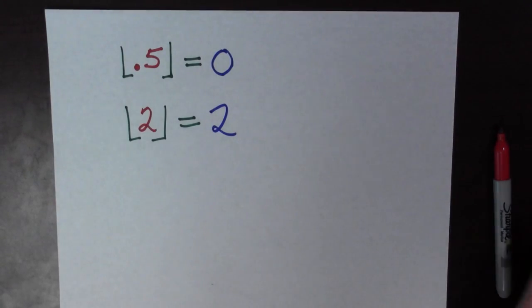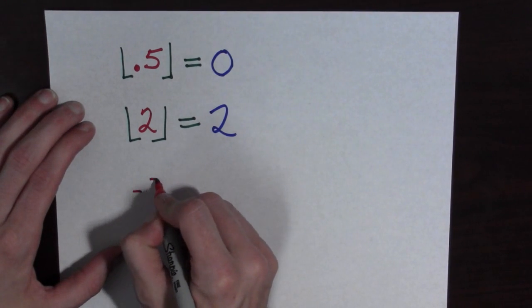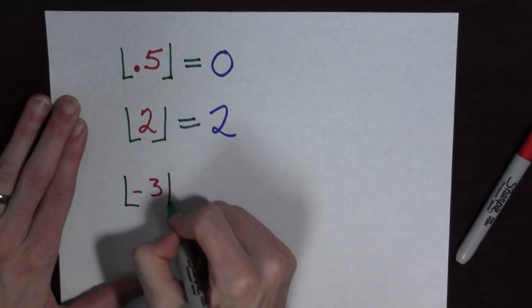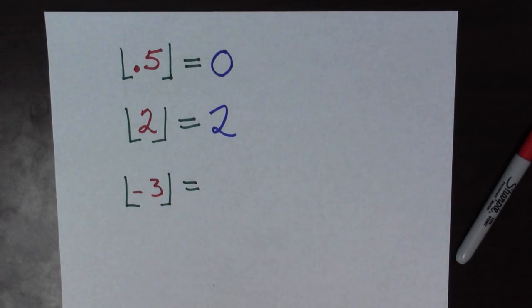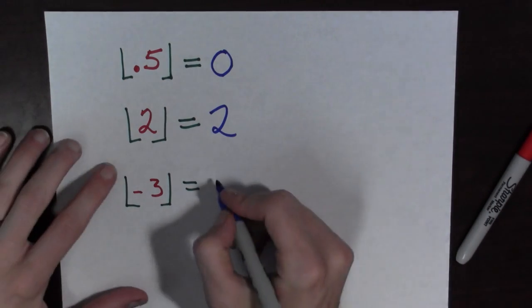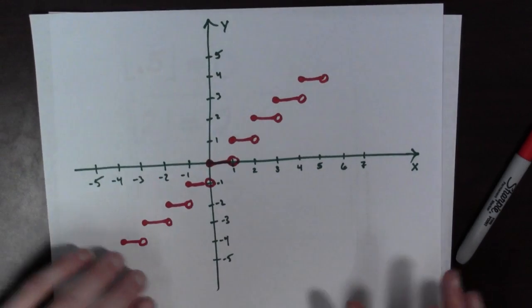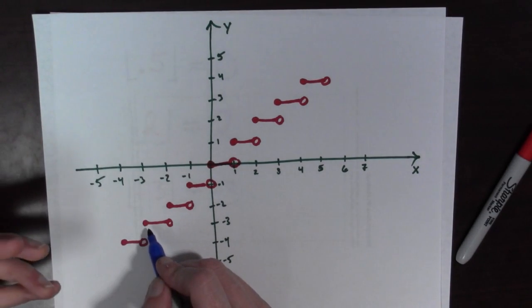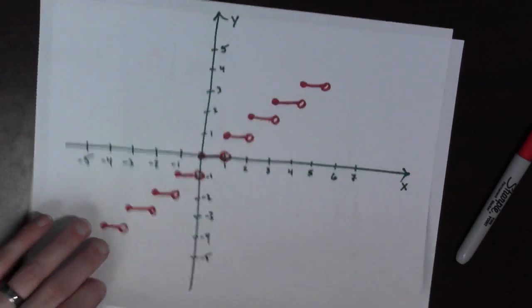And let's do one more example. How about negative 3? So, what's the Greatest Integer that's less than or equal to negative 3? Well, let's see. The Greatest Integer is going to be negative 3 again. So, let's look at the graph. So, here we go. So, negative 3, it's an integer itself, and it is the Greatest Integer that's less than or equal to negative 3.